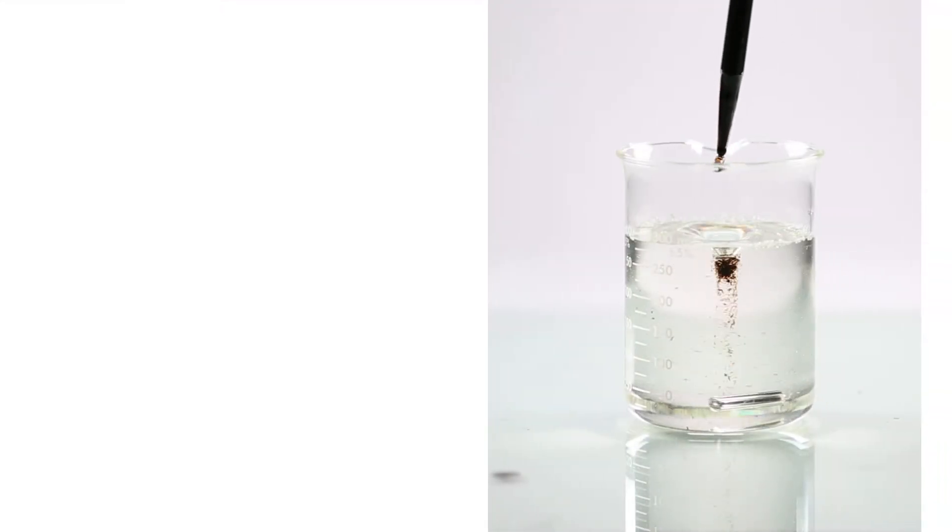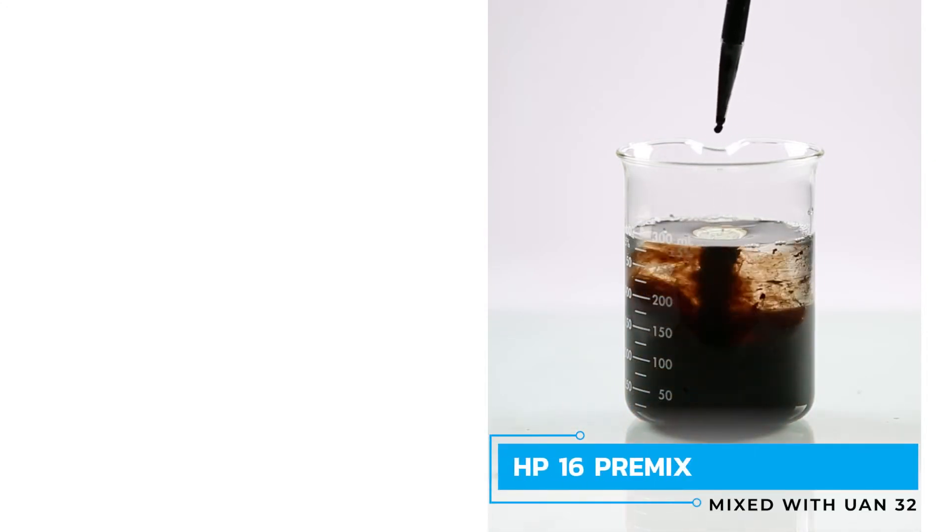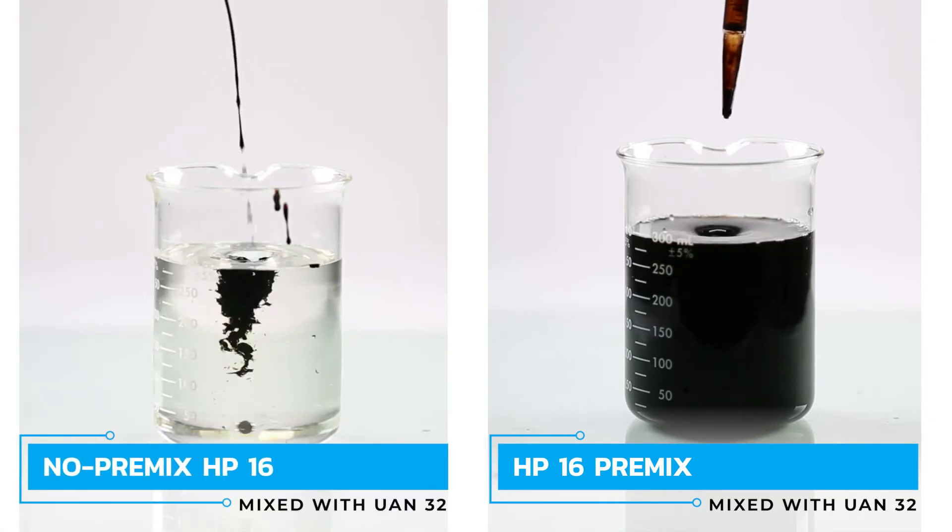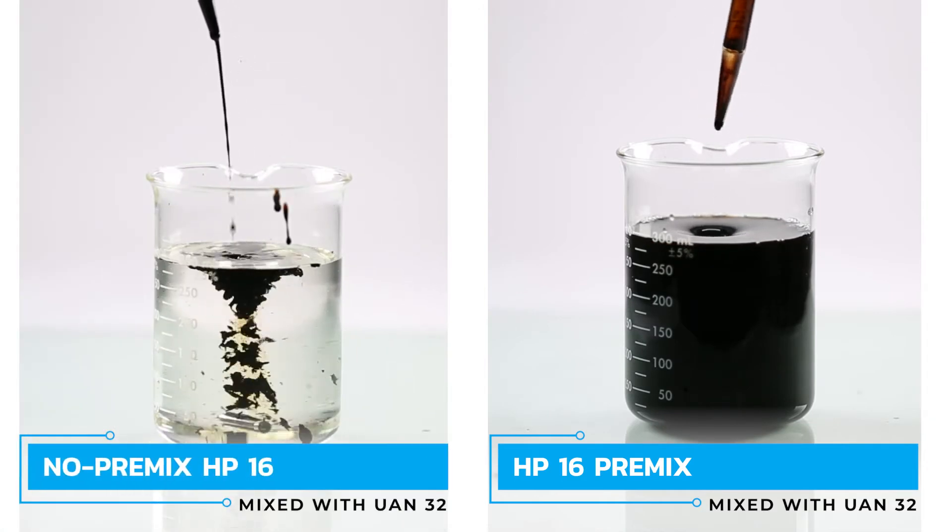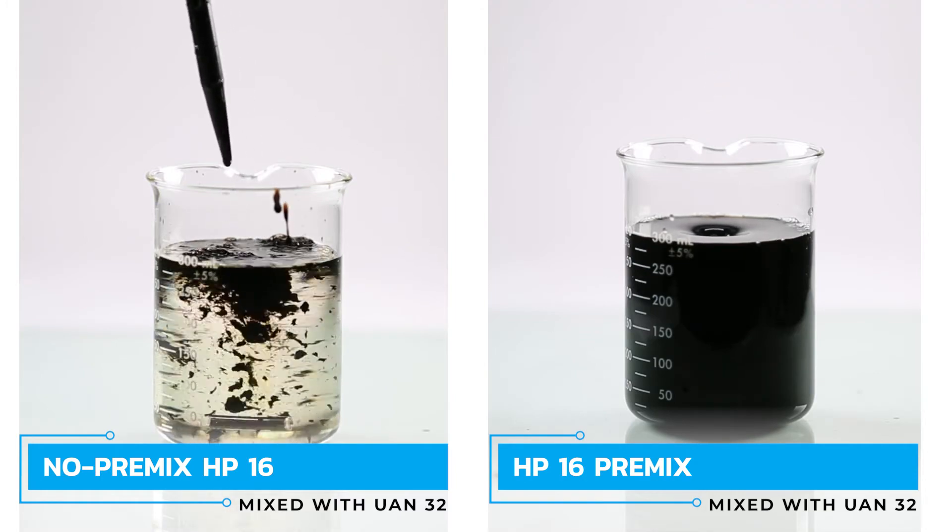Now, on the right side of the screen, watch what happens when we apply the Humapro 16 KOH premix to UAN32. For comparison, on the left side we are again showing what happens when humic acid is applied without a potassium premix. The high pH of the potassium hydroxide in the premix prevents precipitate from forming.